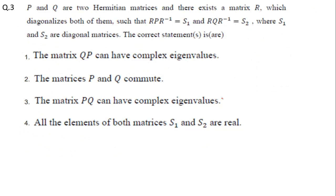Question three: P and Q are two Hermitian matrices and there exists a matrix R which diagonalizes both of them, such that RPR^(-1) = S_1 and RQR^(-1) = S_2, where S_1 and S_2 are diagonal matrices. The correct statement or statements is or are, and there are four options.